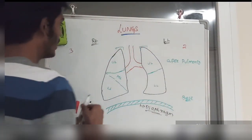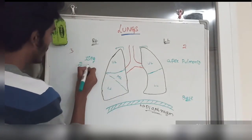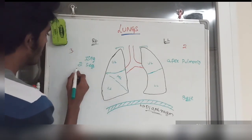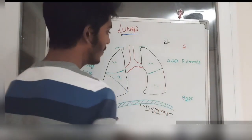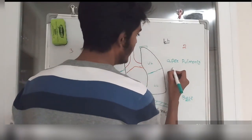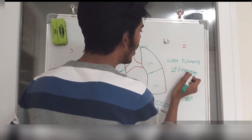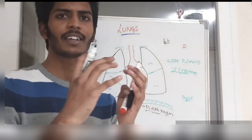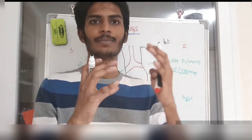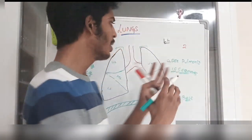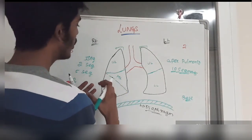The right upper lobe has three segments, the right middle lobe has two segments, and the right lower lobe has five segments — totaling ten segments. On the left side, the upper lobe has five segments and the lower lobe has five segments, also totaling ten segments. Multiple segments combine together to form a lobe.